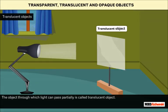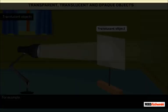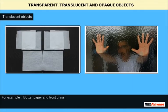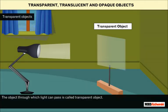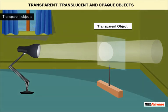The object through which light can pass partially is called a translucent object. For example, butter paper and frosted glass.